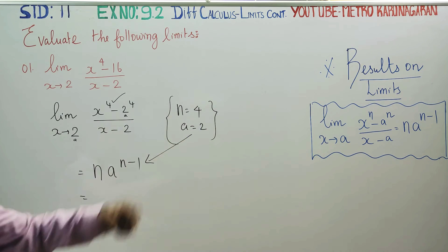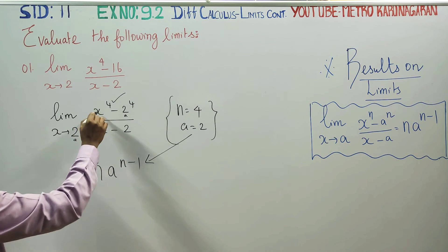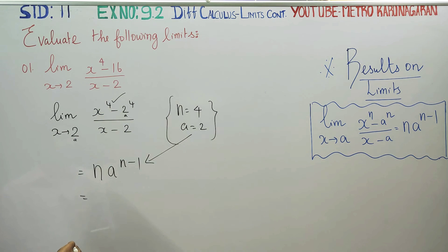This is the ready-made result on limits. Now, you can substitute: limit by 2, substitute 0 by 0, it is an indeterminate form.